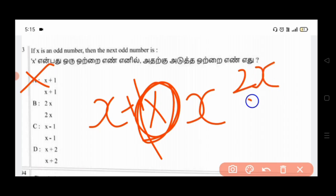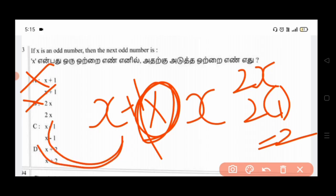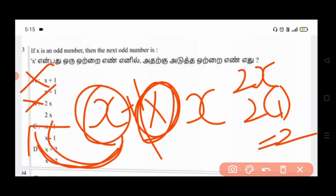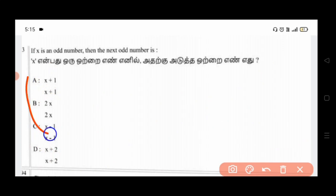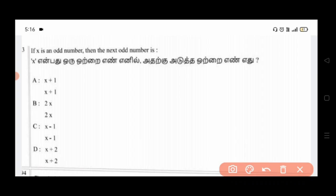If you look at 2x, you can use 2x. If we use 2x, and then use x minus 1, you can use 3 options. Then option D will be correct. How do we check x plus 2? Then x plus 2 is correct.